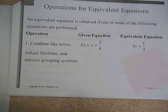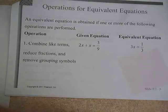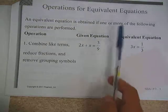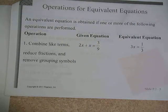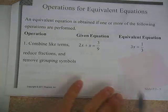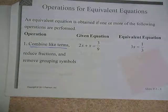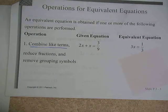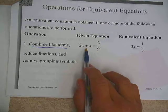Let's take a look then at essentially what amounts to step one for dealing with any equation. This talks about equivalent equations. An equivalent equation is obtained if one or more of the following operations are performed. So the first one is combining like terms.